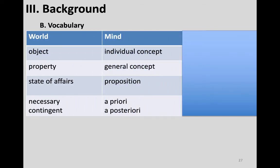When we talk about the mind, we use terms that refer to things in the mind corresponding to things in the world. If you have a concept of the curtains, that's called an individual concept because it's a concept of a particular object. A general concept is one that applies to more than one particular individual. When you have a concept of a property — like purpleness — that's a general concept, because the purpleness of the curtains is the same property as the purpleness of an eggplant.